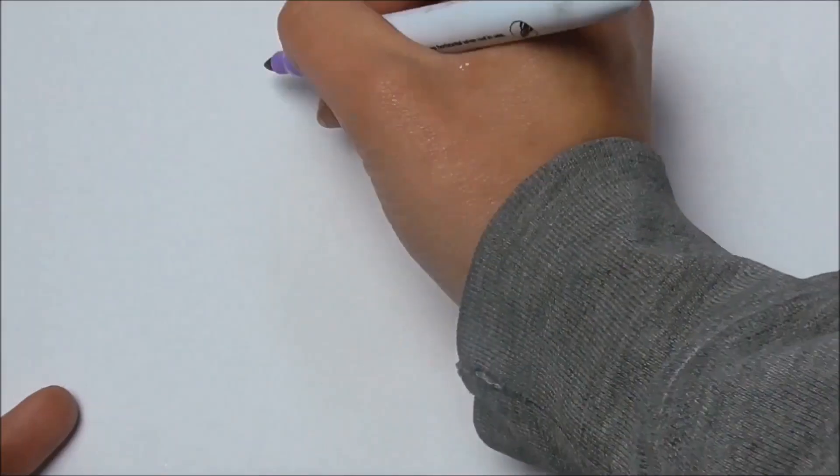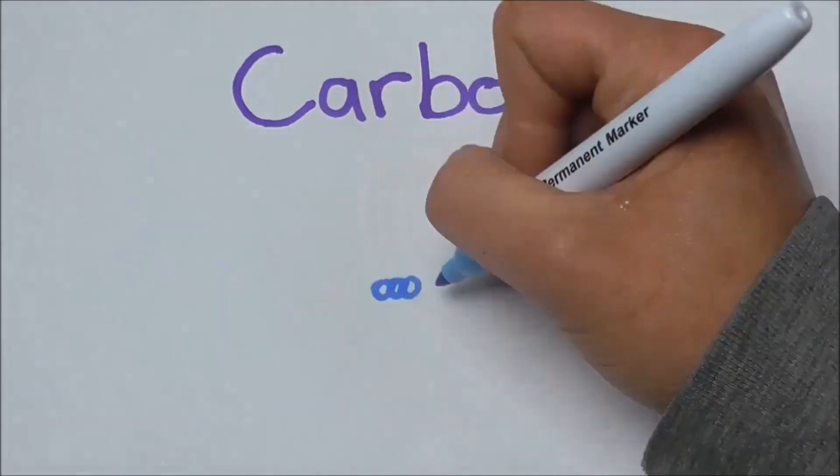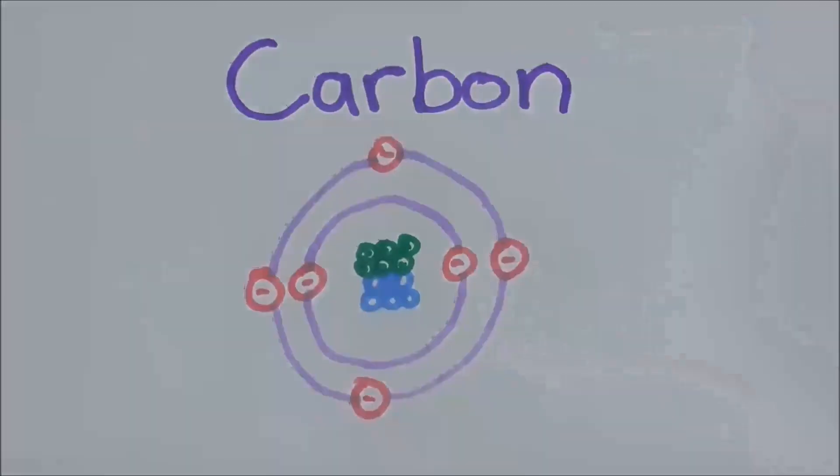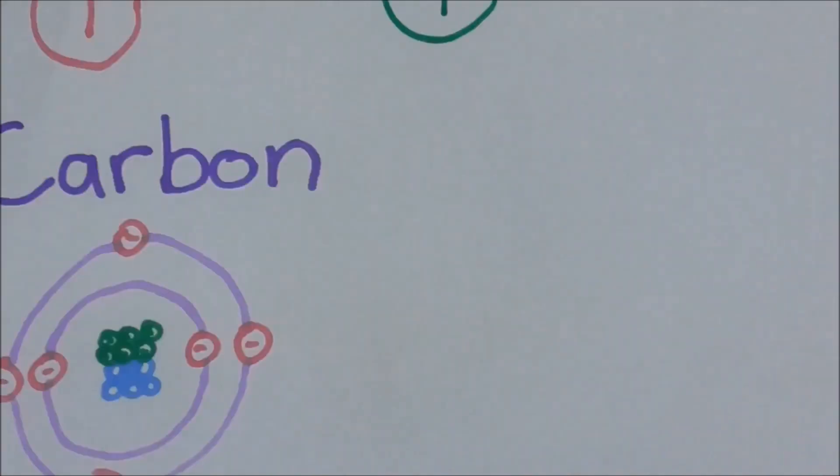Carbon: six neutrons, six protons in its nucleus, and it has six electrons. Two on the inside, and then remaining four go on the outside.